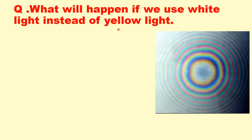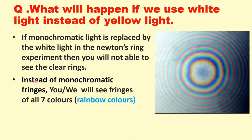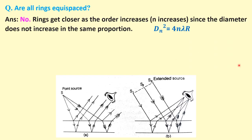What will happen if we use white light instead of yellow light? If we replace monochromatic light with white light, we will not be able to see clear rings. Instead of monochromatic fringes, we will see fringes of all seven rainbow colors — colored fringes. Are all rings equally spaced? The answer is no. Because of the relation D_n squared equals 4n·lambda·R, if we put values of n equal to 1, 2, 3, 4, we can see the spacing decreases for higher orders — the rings get closer together as we go away from the center.